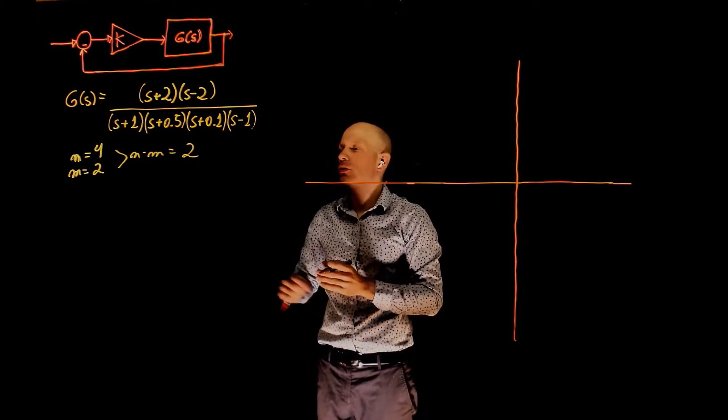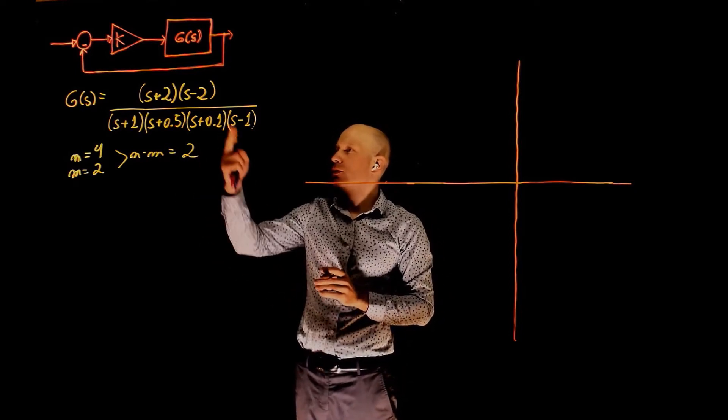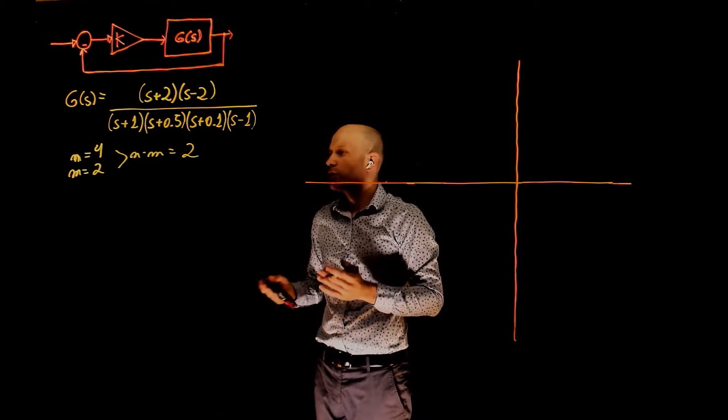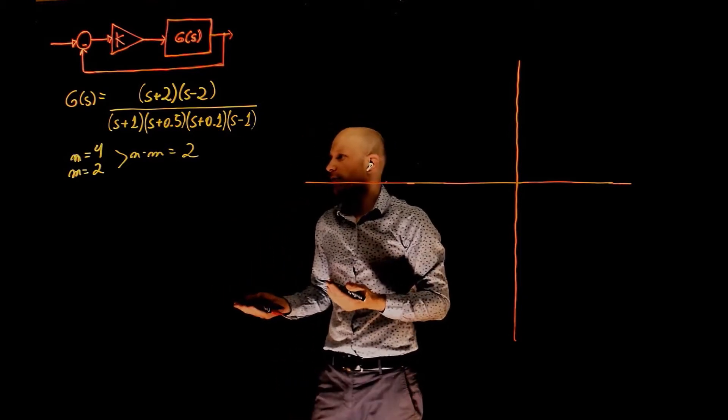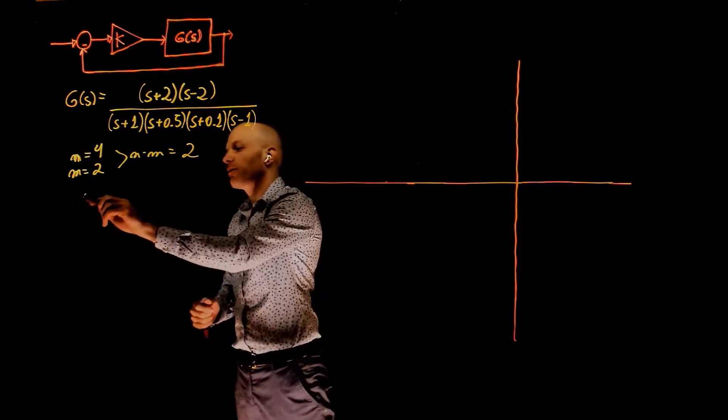Two of these poles will now have to go to infinity, whereas the other two poles will migrate to the zeros. These poles will go to infinity following asymptotes, and you can now determine the value of those asymptotes using the same formula again.